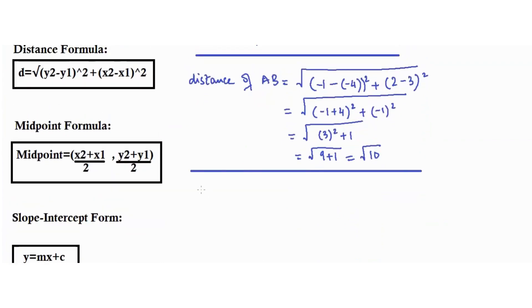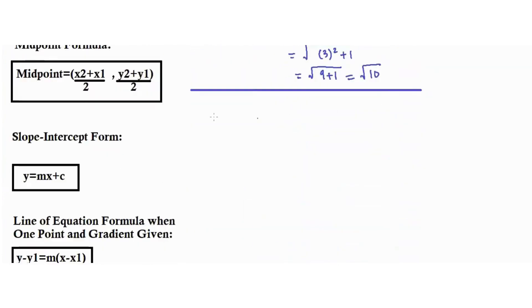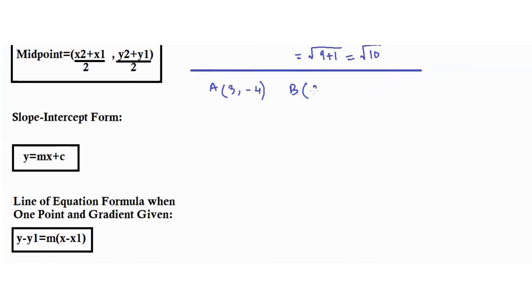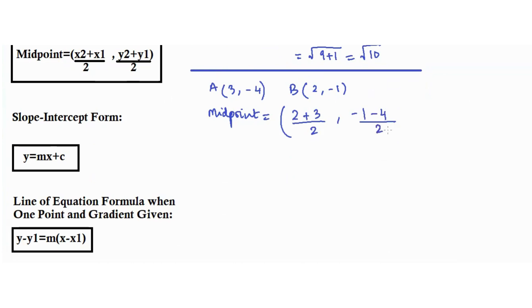To find the midpoint of AB, where A is (3, -4) and B is (2, -1), we calculate midpoint equals (2 plus 3) over 2 comma (negative 1 minus 4) over 2. That gives 5 over 2 and negative 5 over 2, which is the midpoint of line AB.